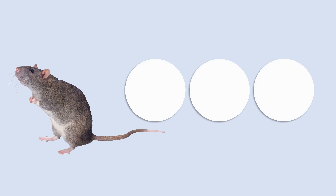Very good. The next word is rat. When I say rat, what's the first sound you hear? Rat, rat. Very good, r sound. And what's the second sound? Rat, rat. Yes, a — a sound. What about the last sound? Rat, rat. Yes, t is the last sound of the word rat.